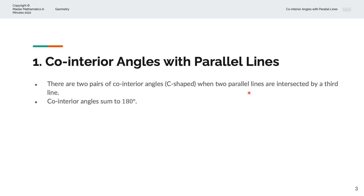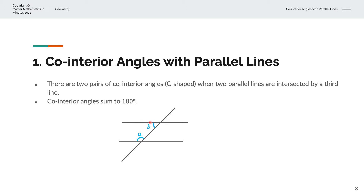We'll consider this visually. We have two parallel lines and a third straight line intersecting the two parallel lines. If we were to label this angle as A, the co-interior angle is here, and we can call that B. So we have the C-shape: horizontal line going across, vertical line coming down, and horizontal line going across as well, tracing out a C-shape. And A plus B is equal to 180 degrees.